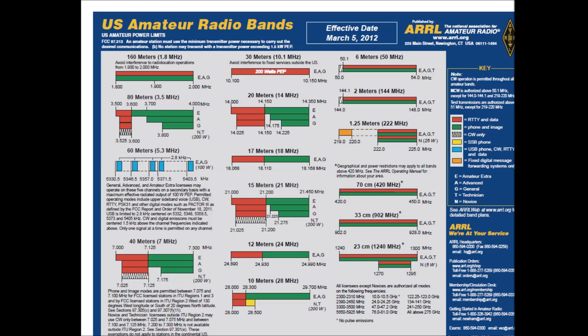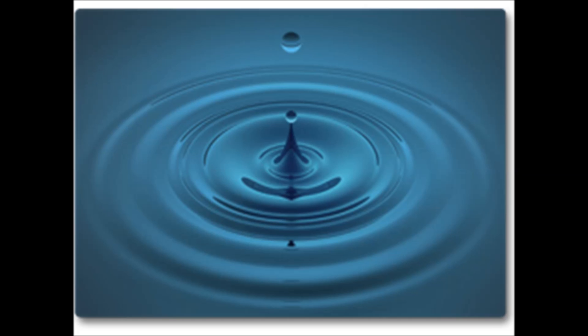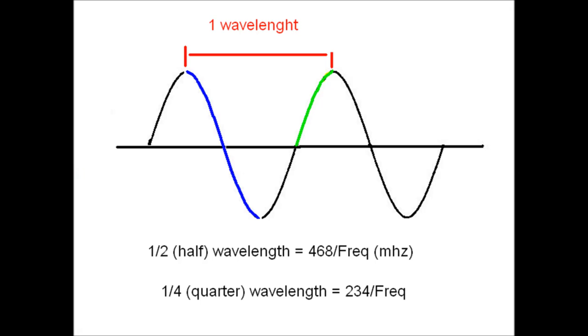Well, the meter band is a measurement of a specific radio frequency's wavelength, and much like a drop of water in a puddle, radio waves radiate out from the transmitter in waves. And the wavelength is determined by measuring the distance between the two peaks, and at lower frequencies there is greater distance between those two peaks, increasing the wavelength, and at higher frequencies the peaks are closer together, decreasing the wavelength.